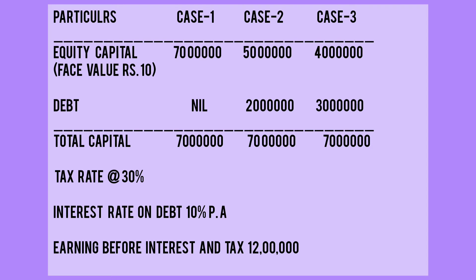Three cases are given. Equity capital: 70 lakh, 50 lakh, and 40 lakh. Debt: first case nil, second case 20 lakh, and third case 30 lakh. So total capital is 70 lakh in all three cases. Tax rate is 30%, interest rate is 10% per annum, and Earning Before Interest and Tax is 12 lakh. Now let us see the solution.